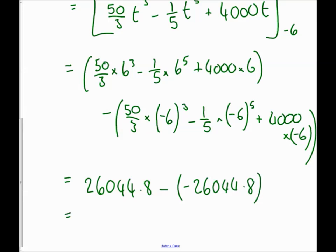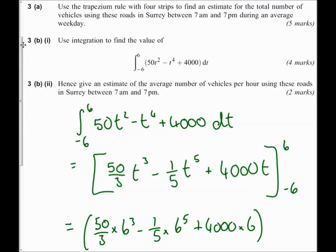Again I've got a minus, so I'm putting it into a bracket. My minus my minus make a plus, so when I add them I get 52089.6. When it says hence give an estimate for the average number of vehicles per hour using these roads in Surrey between 7 a.m. and 7 p.m., so we've found the total number of vehicles.